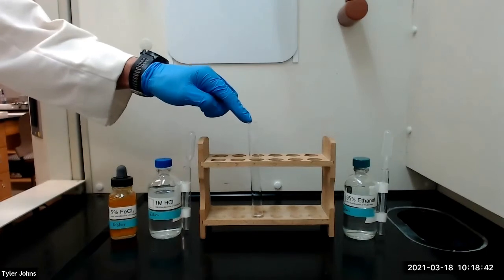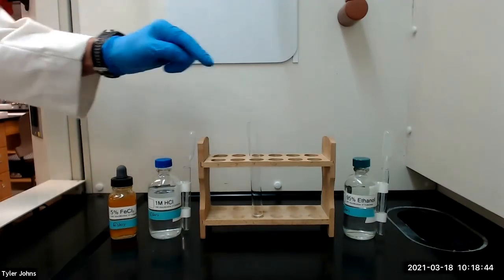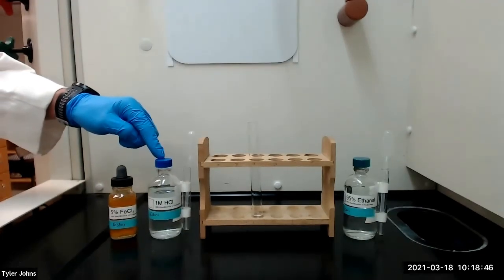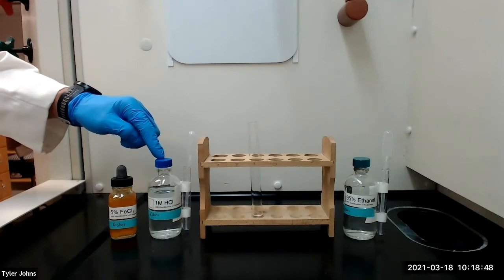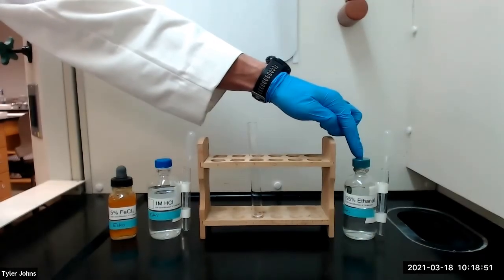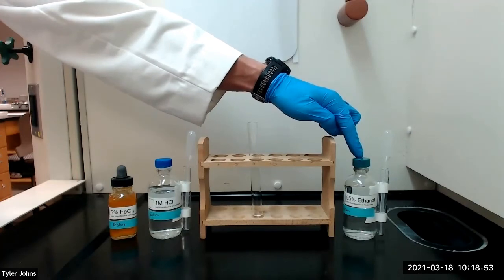After removing the solution from the heat and allowing it to cool, we will add two milliliters of one molar hydrochloric acid. If the solution becomes cloudy, we will need to add two milliliters of 95% ethanol to clarify it.